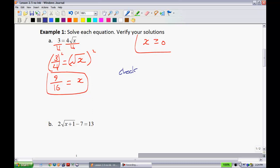Now, I'd want you to perform a check. All right? When we perform a check, we have 3 is equal to 4 times the square root of 9 over 16. All right? And so we're hoping that the left-hand side equals the right-hand side. So we have 3 is equal to 4. This turns out to be 3 quarters. Of course, those 4s cancel. So we have 3 is equal to 3.